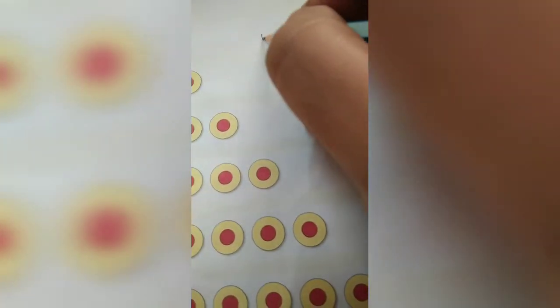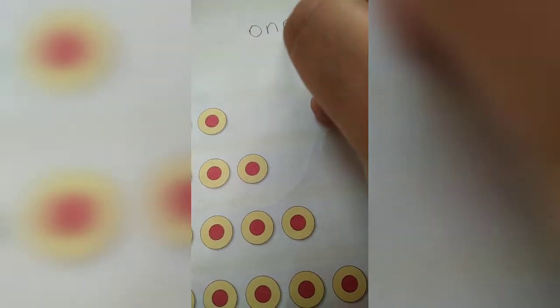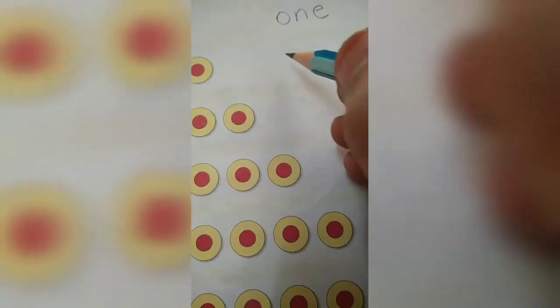Turn the page, and the number name. 1, so 1 is what is O, N, E, 1. Here, click on O, N, E, 1. 2, T, W, O, 2. T, W, O, 2.